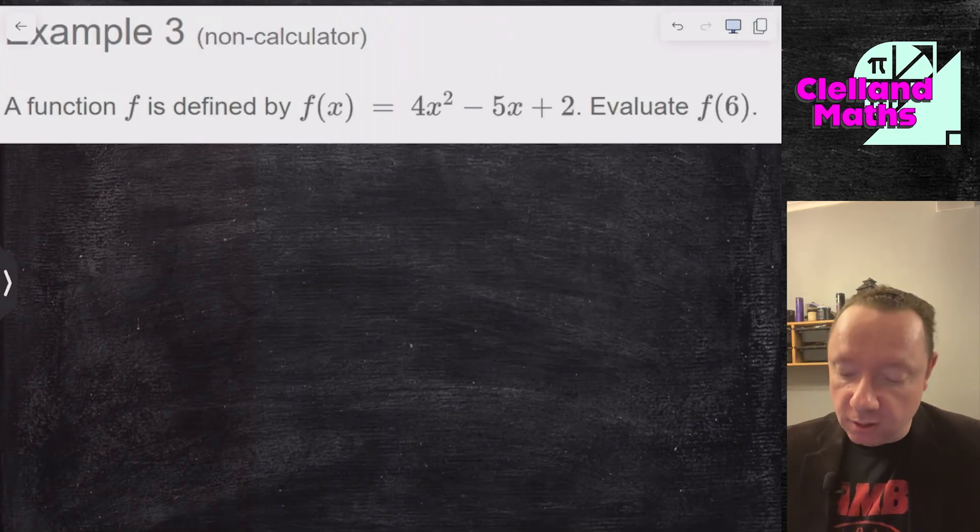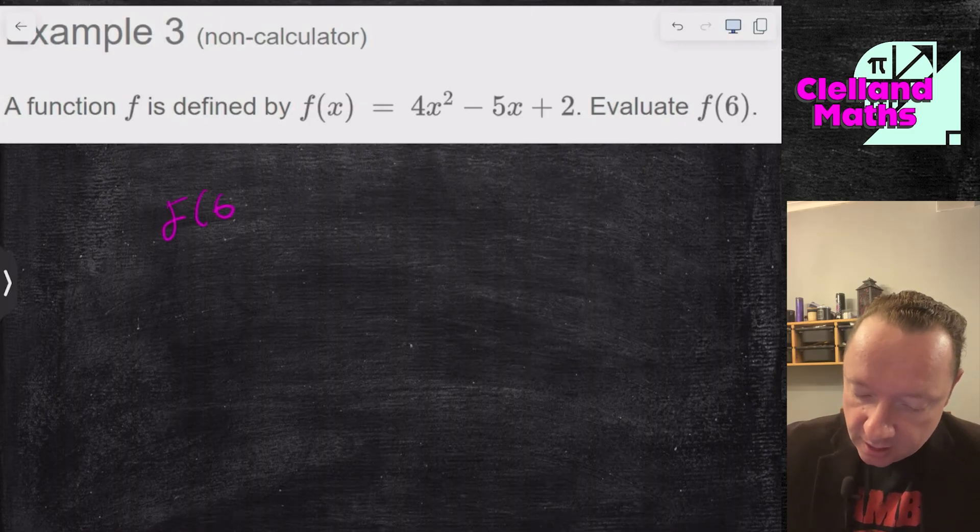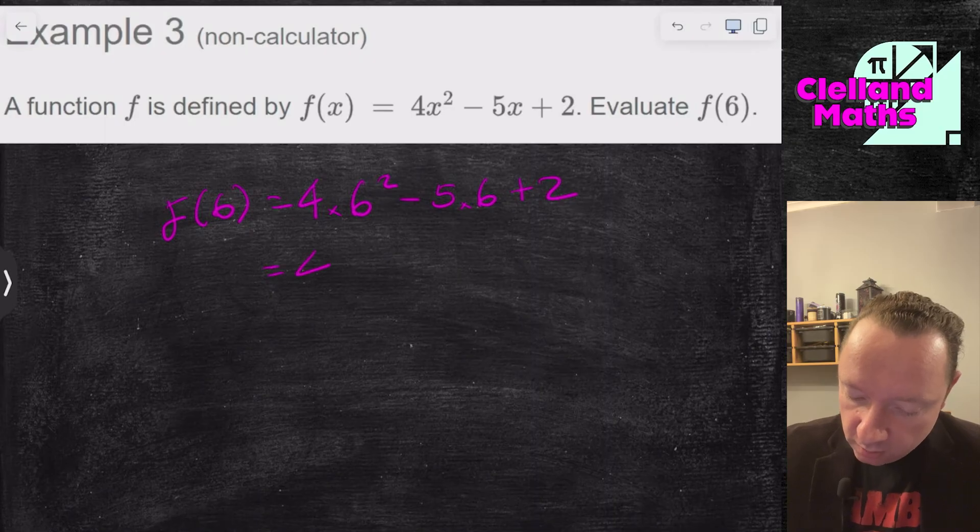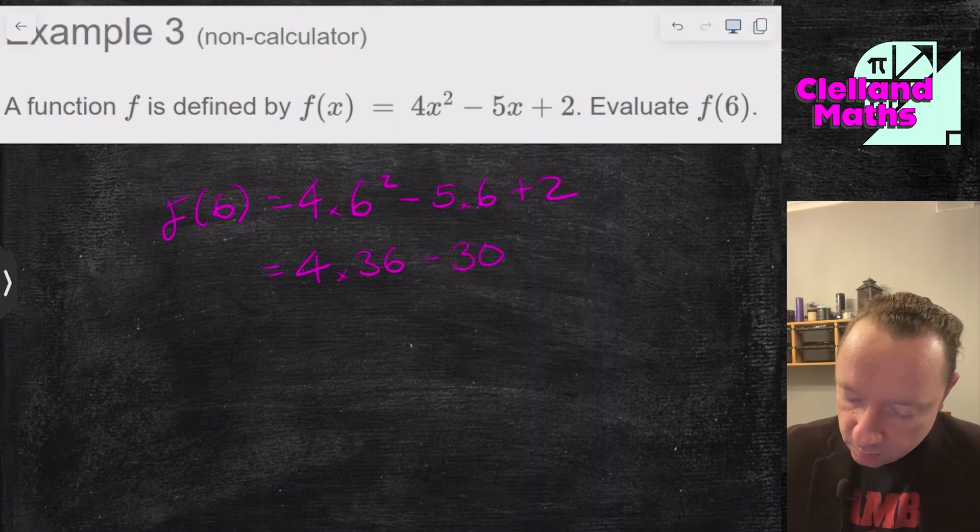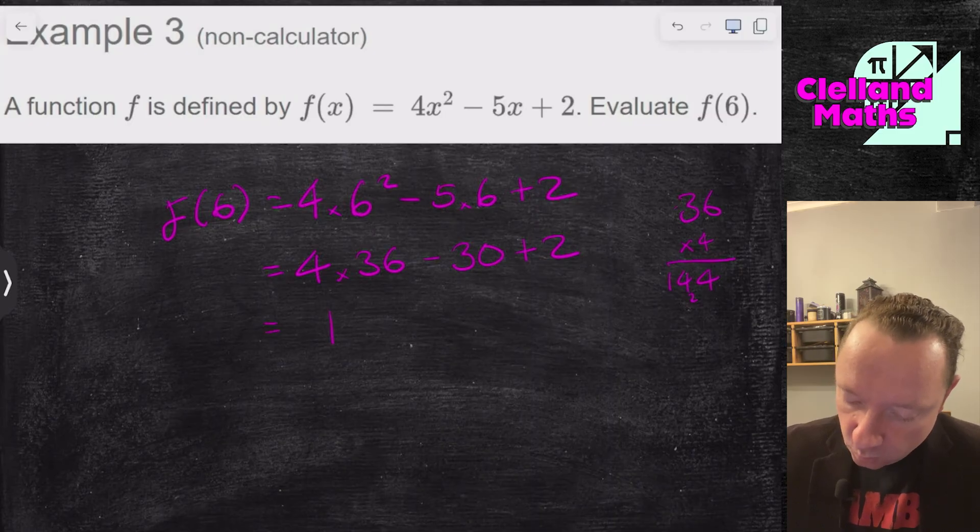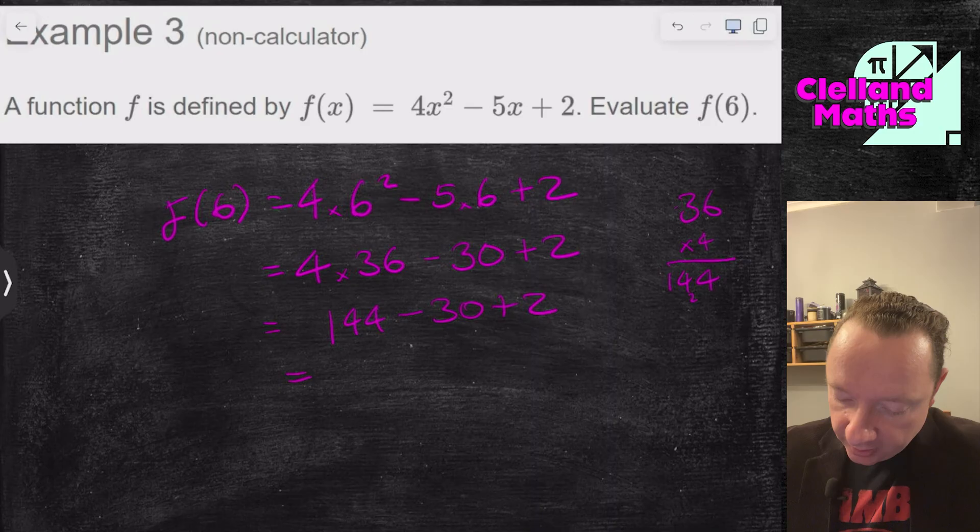Example 3. A function is defined as f of x equals 4x squared minus 5x plus 2. Find f of 6. So f of 6, every single x has become 6. So I've got 4 times 6 squared minus 5 times 6 plus 2. Being careful, 4 times 36 minus 30 plus 2. 4 times 36 is 144 minus 30 plus 2. And now you just do it in the order it's written. So 144 minus 30 is 114 plus 2 is 116. And we're done there.